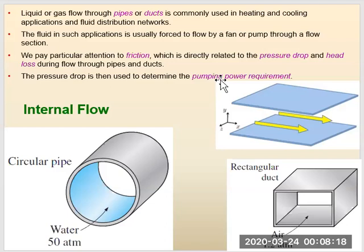Liquid and gas flow through pipes and ducts, and they are commonly used in HVAC systems and piping. The fluid in such applications is usually forced to flow by a fan, pump, or compressor through flow sections. We can have different forms of cross-section for the fluid flow: circular, non-circular, or rectangular type, as from a duct, for example.